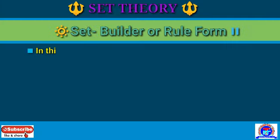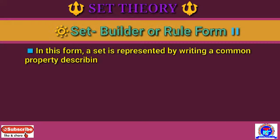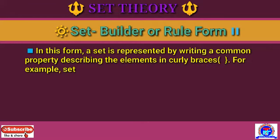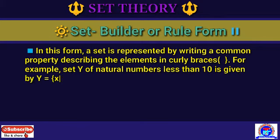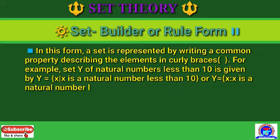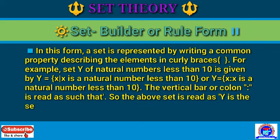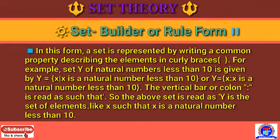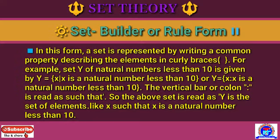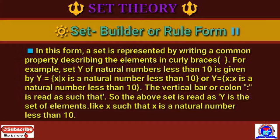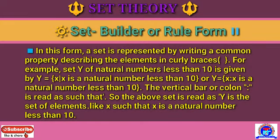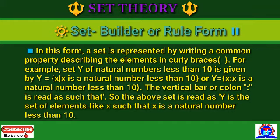Now we understand set builder or rule form. In this form, a set is represented by writing a common property describing the elements in curly braces. For example, the set Y of natural numbers less than 10 is given by Y = {x | x is a natural number less than 10}. The vertical bar or colon is read as 'such that', so the set is read as: Y is the set of elements x such that x is a natural number less than 10.